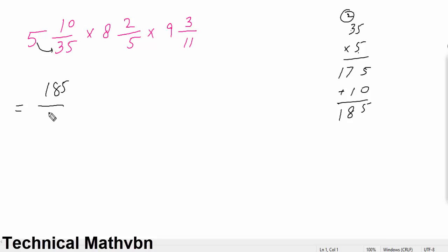185 over 35 after solving. Multiply - 8 by 5: 8 fives 40 plus 2 gives 42 divided by 5. Multiply 9 by 11: 11 nines are 99, and in this plus 3 gives us 102 over 11.